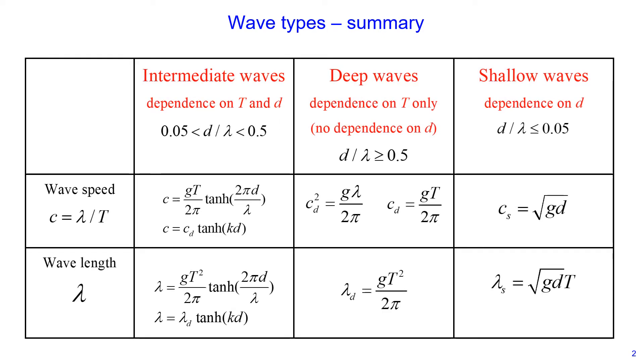On this slide I show a summary of how waves are defined and what types of waves we have, and also how you can calculate wave speed and wavelength for each wave type. We have three types of waves: intermediate waves, deep waves, and shallow waves. These are defined based on the ratio of the water depth divided by wavelength. When this ratio is between 0.05 and 0.5 we have intermediate waves. When this ratio is greater or equal to 0.5 we have deep waves, and when this ratio is less or equal to 0.05 we have shallow waves.